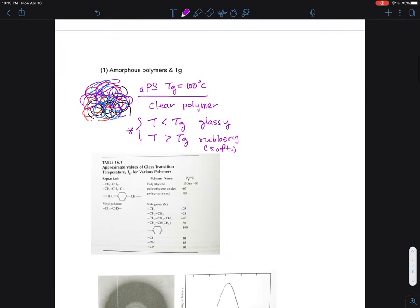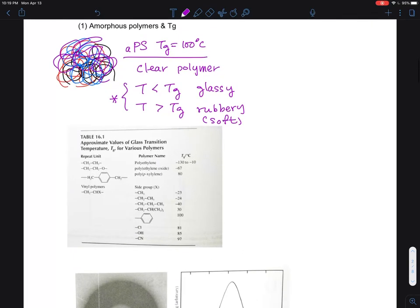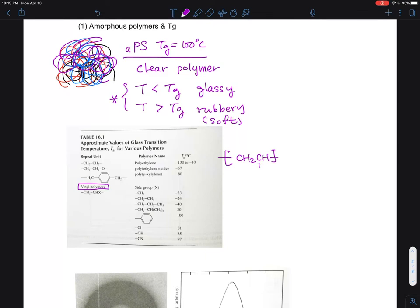Here I'm trying to use resources in the textbook, chapter 16 of the Young and Lovell textbook. They actually have a nice summary about vinyl polymers. When you see the vinyl polymer, it has a chemical structure of CH2CH with an X, which is a side group.